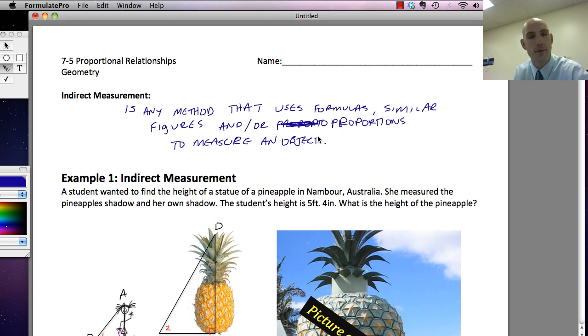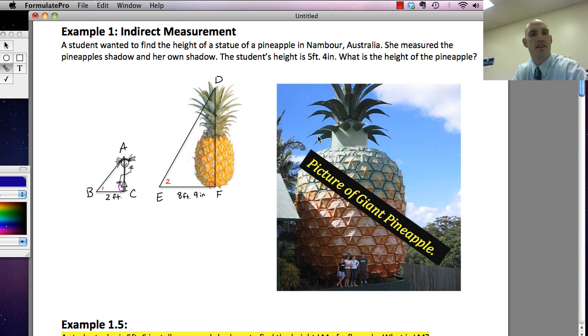Okay, and so in example one, we're going to do an example of indirect measurement, and we're going to use a pineapple found in Nambour, Australia. A student wanted to find the height of the statue of a pineapple in Nambour, Australia. She measured the pineapple's shadow and her own shadow. The student's height is 5 feet 4 inches. What is the height of the pineapple? So we're dealing with similar figures here. So basically what she's drawn is she's drawn a triangle using herself as one of the legs, and is comparing that to the height of the pineapple as that same leg. The shadow is the shadow that she is casting. The shadow of the pineapple is the shadow that, the shadow of the pineapple is the other shadow she's measuring. So we're assuming because these are right triangles, and the sun is at the same angle, that these two triangles are similar. And so what she's going to do is set up a proportion. So if we look at the proportion, AC, which is her height,